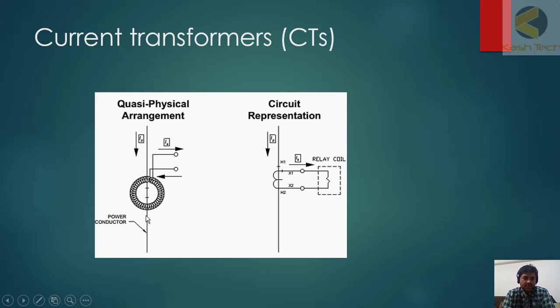This transformer is actually stepping the voltage up and it is stepping down the current. So for example, a CT has a turn ratio 100 by 1. If 100 ampere current is flowing in the primary side, at secondary side you will get 1 ampere.